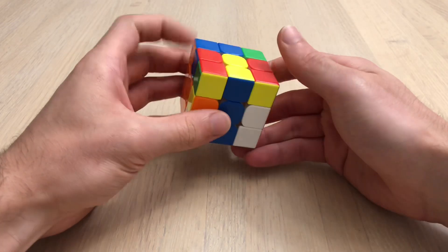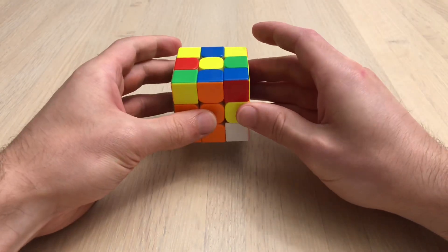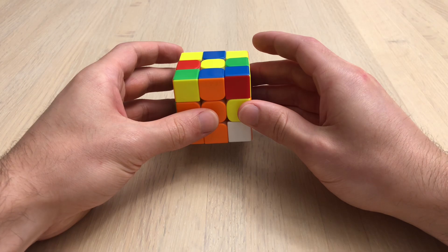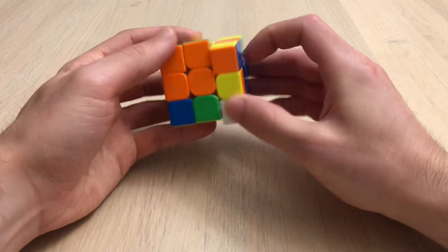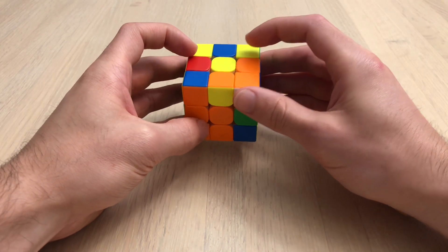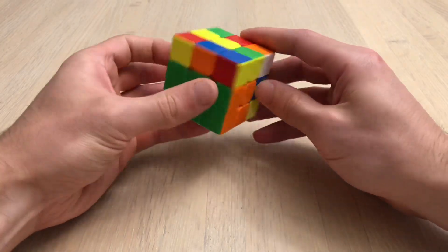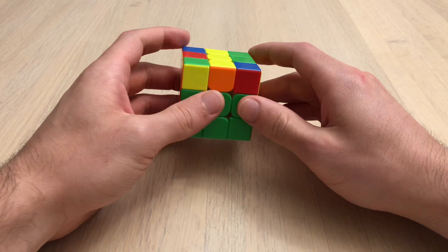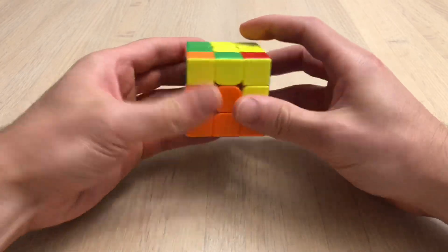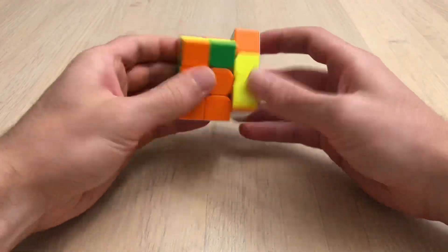These two. And I could go like that, but then no edges oriented. So I'm going to do U2, paired up like that. Then OLL and PLL.